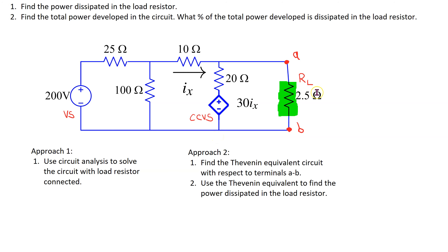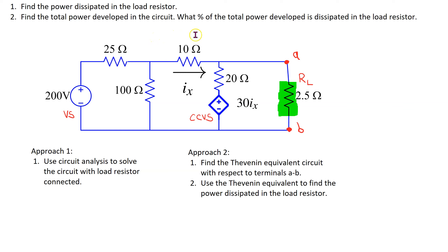The load resistor RL is connected between terminals A and B. We are interested in finding the power dissipated in the load resistor, the total power developed in this circuit, and what percentage of the total power developed is dissipated in the load resistor.